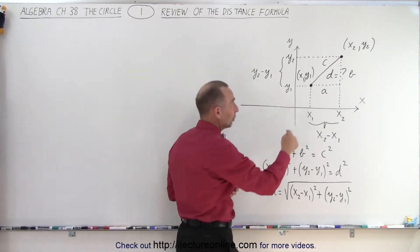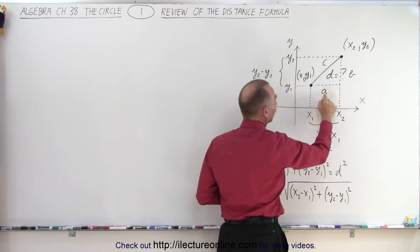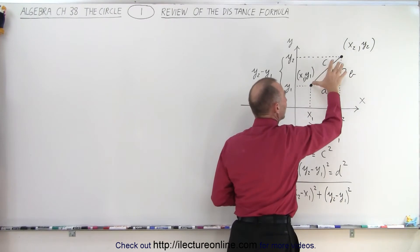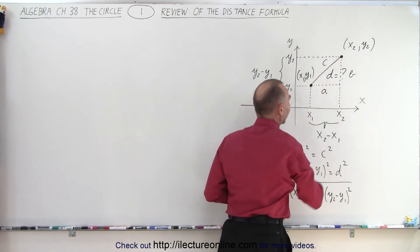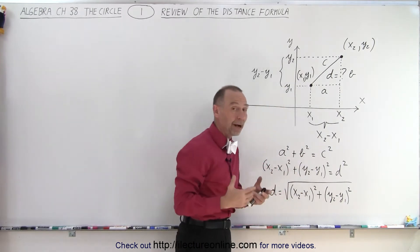To find the distance formula, we draw a little triangle. And we can see that this side here, let's call that side A. Let's call this side B. And then the hypotenuse, let's call that C. So that A squared plus B squared equals C squared. That's the Pythagorean theorem.